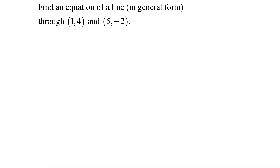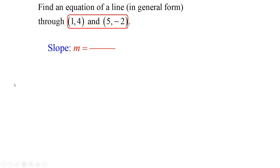Find an equation of a line in general form through the points (1, 4) and (5, negative 2). The only geometric property given is two random points on the line. Given two random points, we can find the slope of the segment between those two points. Going back to algebra 1 — the slope M equals rise over run. Rise is the change in Y coordinates: Y sub 2 minus Y sub 1. Run is the change in X coordinates: X sub 2 minus X sub 1.